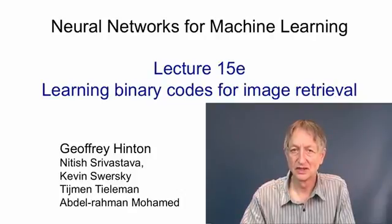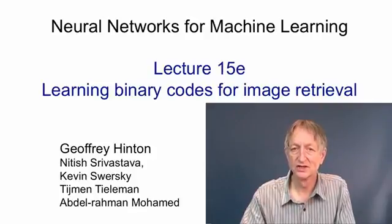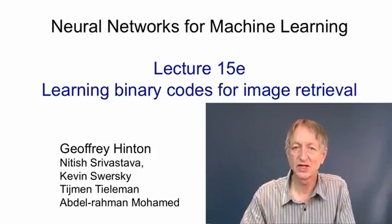In this video, I'm going to talk about the use of binary codes for image retrieval. For retrieving documents, people like Google have such good methods already that techniques like semantic hashing may not be of much value. But retrieving images is much more difficult. And methods that convert an image into a fairly large binary code of, say, 256 bits, seem to work quite well.